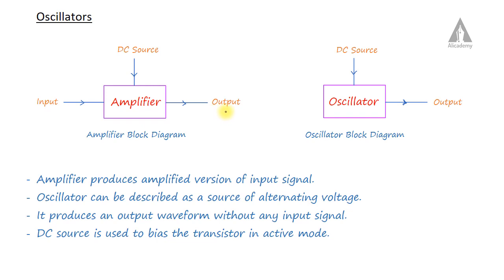Now here you can see the block diagram of an oscillator. The oscillator does not have any input signal — it does not need any input signal. Oscillators can be described as a source of alternating voltage. The output is created without any input. It produces an oscillating voltage or oscillating signal as output. The DC source is provided to bias the transistors in the oscillator circuit.